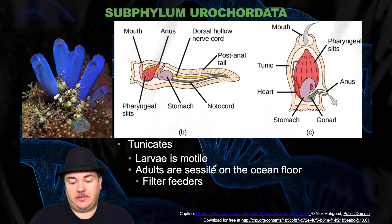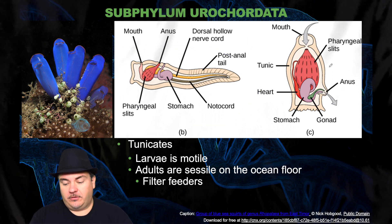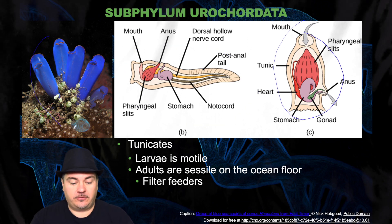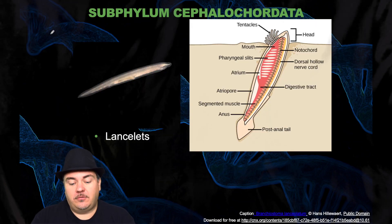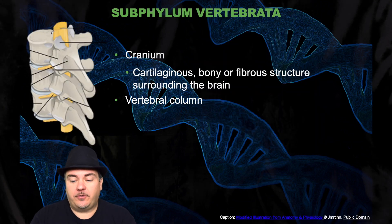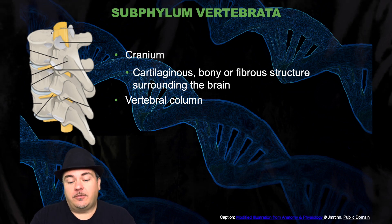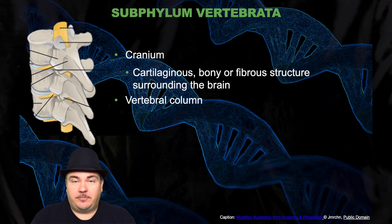Within the phylum Chordata, first you have the invertebrates we briefly talked about in the last chapter. As a quick refresher: you have the Urochordata, which are the tunicates — the larva is motile so it can swim, while the adults are sessile, attached to the ocean floor, and they're filter feeders. Then you have the subphylum Cephalochordata, which is the lancelets. In this chapter we're going to focus on the vertebrates. The vertebrates have a cranium, which is either a cartilage, bony, or fibrous structure surrounding the brain. They also have a vertebral column, hence the name vertebrates.